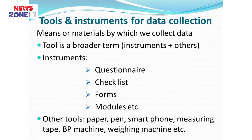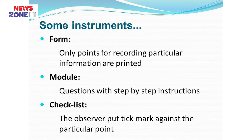A form is a piece of paper in which only points for recording particulars of information are printed. Modules are questions with step-by-step instructions on them. A checklist is a set in which an observer puts tick marks to collect data.